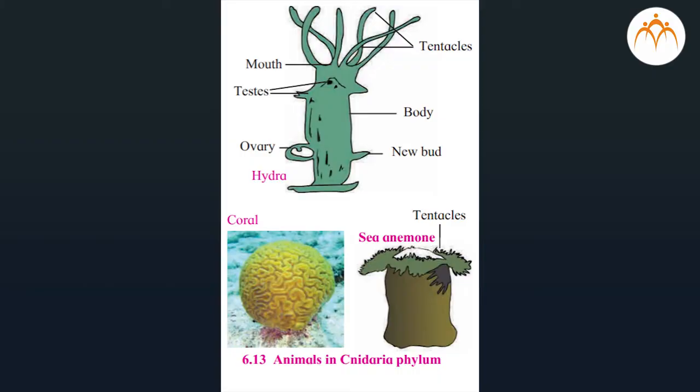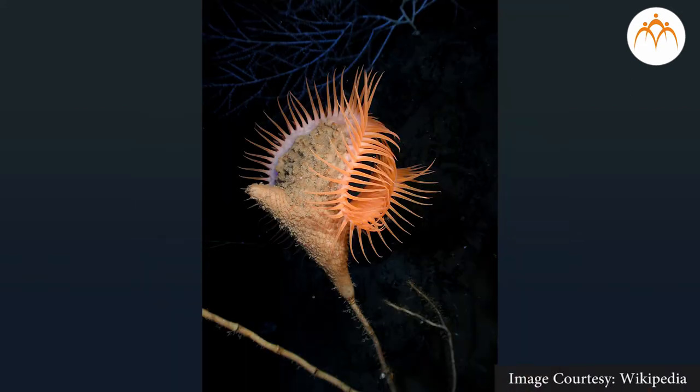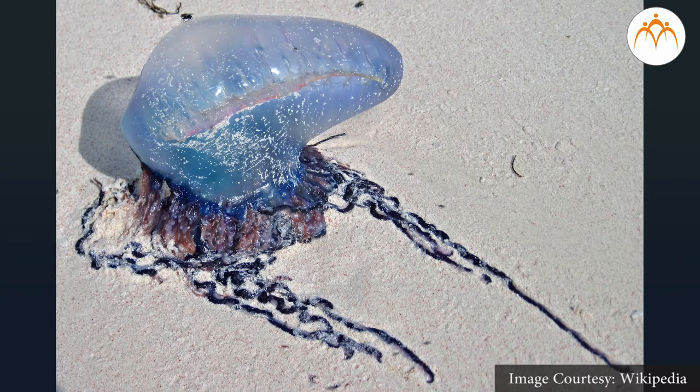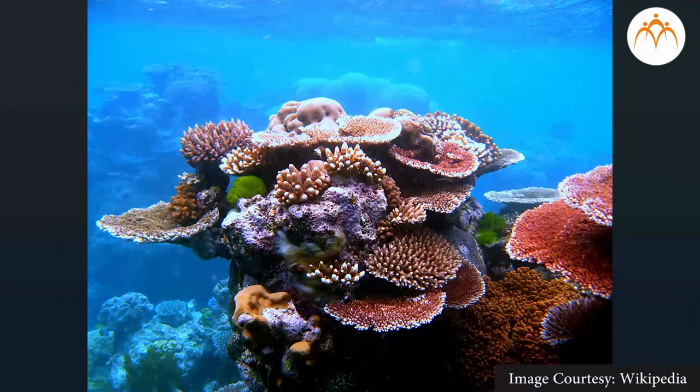Phylum Coelenterata or Cnidaria: the body of these animals is cylindrical or umbrella-like. If cylindrical, it is called a polyp; if umbrella-like, it is called a medusa. Most are marine, with few freshwater dwellers. Their body is radially symmetrical and diploblastic. Cnidoblast-bearing tentacles are present around the mouth — tentacles capture prey while cnidoblasts inject toxin for protection. Examples: Hydra, Adamsia (sea anemone), Physalia (Portuguese man-of-war), Aurelia (jellyfish), corals, etc. Coral reefs in the ocean are colonies of specific cnidarians. A precious stone called coral and the coral powder used in Ayurveda are derived from these reefs.